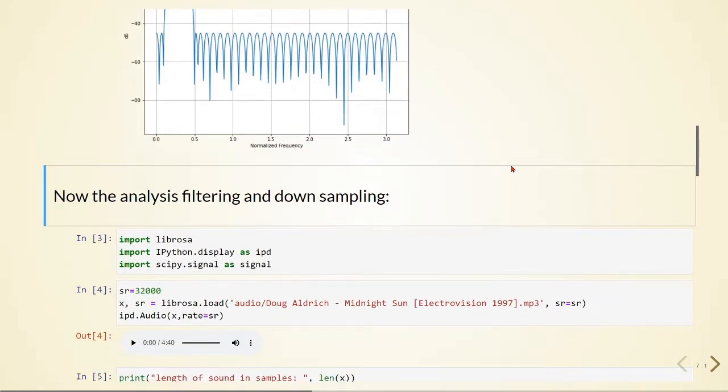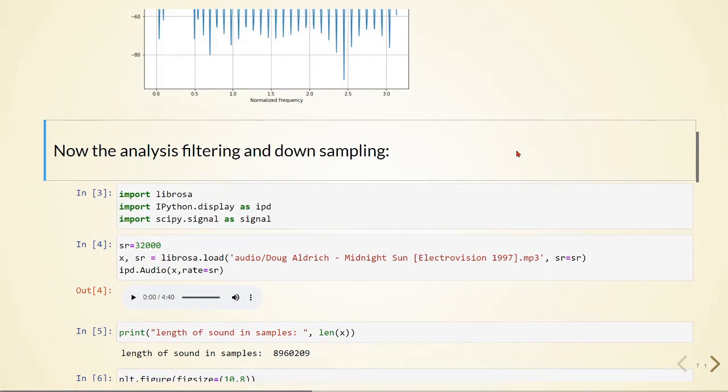So now we will do the analysis filtering and downsampling and for that we are going to use an audio signal. This is the excellent song by Doug Aldrich called Midnight Sun. And for that we are going to use Librosa and IPython Display to play back this audio.